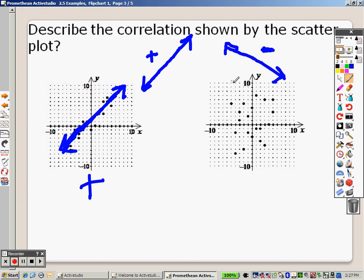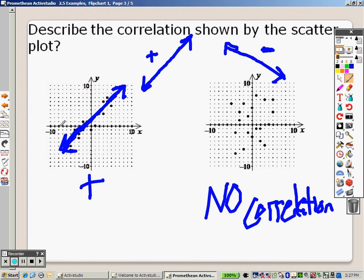Now, is this going down? No. Is it going up? No. It's kind of all over the place, and if it's all over the place, you would say this has no correlation because it's just scattered all over the place.